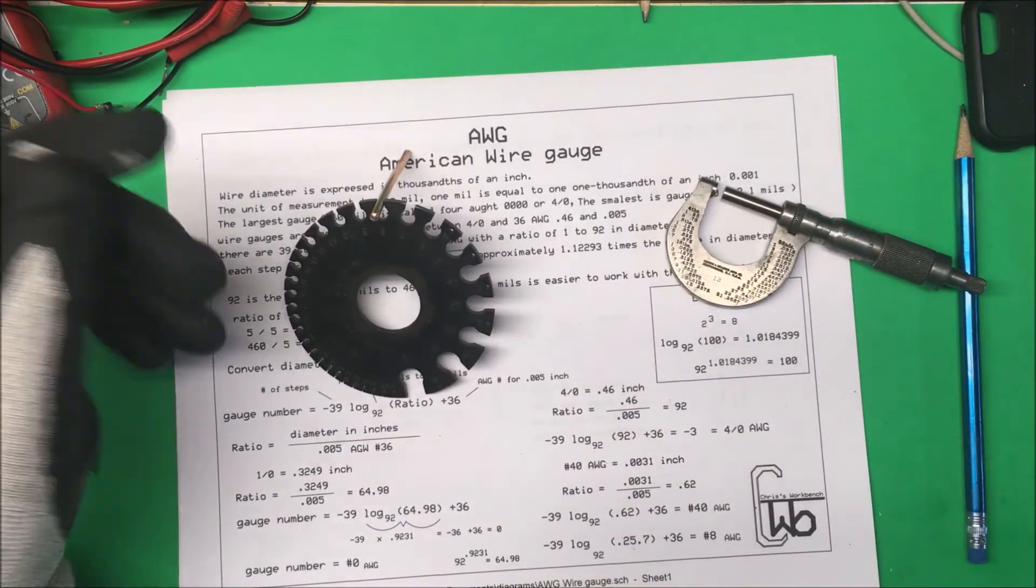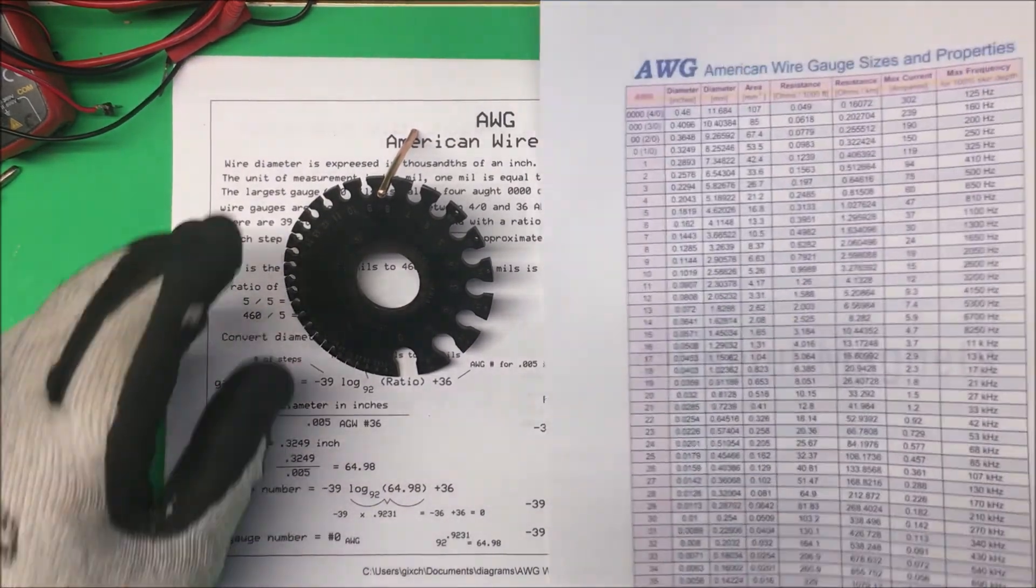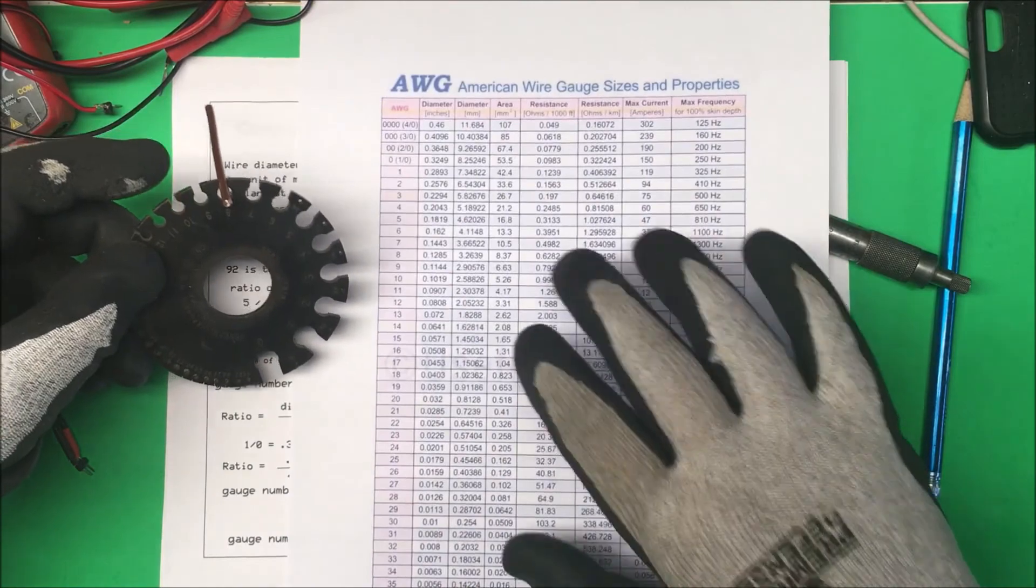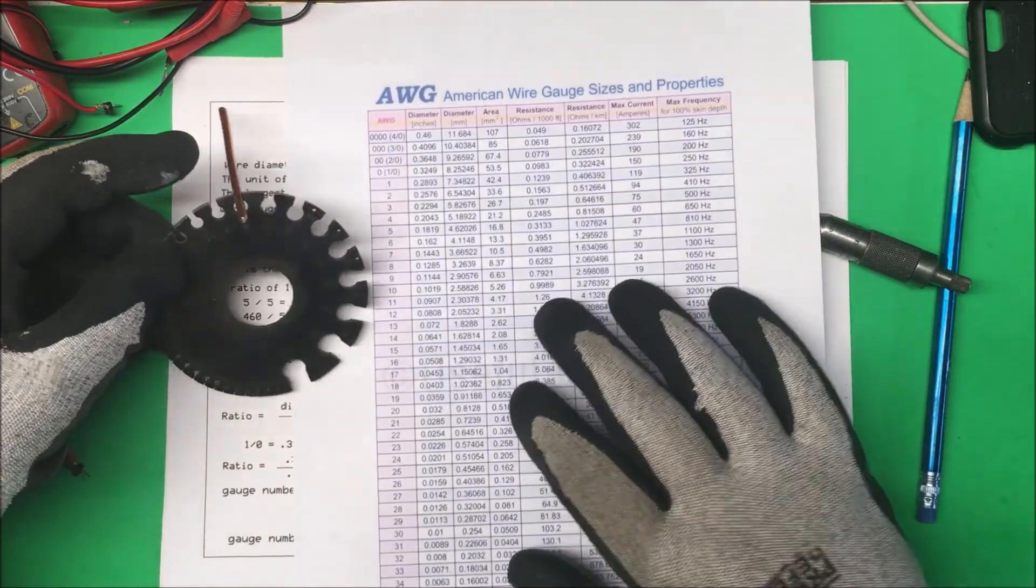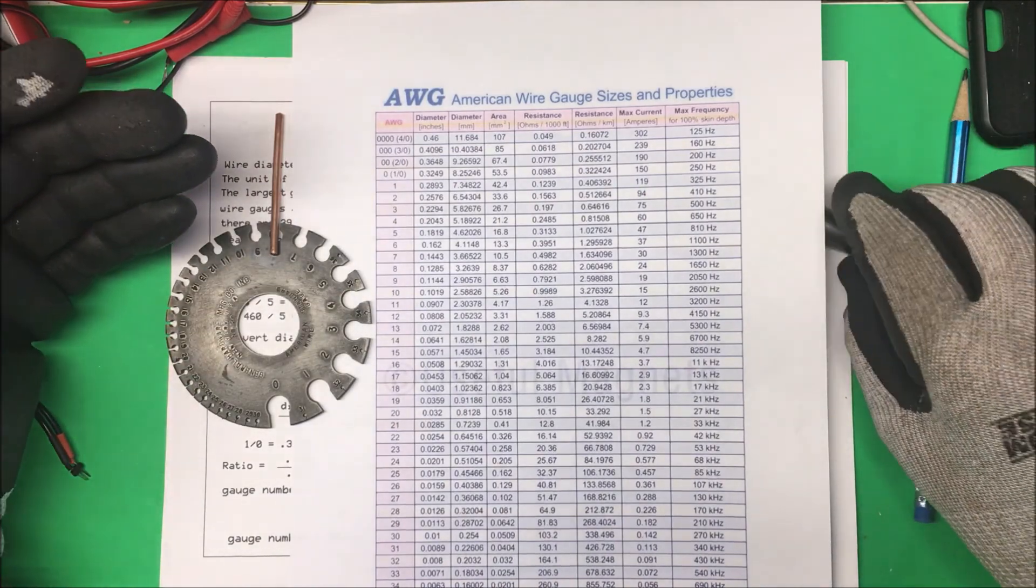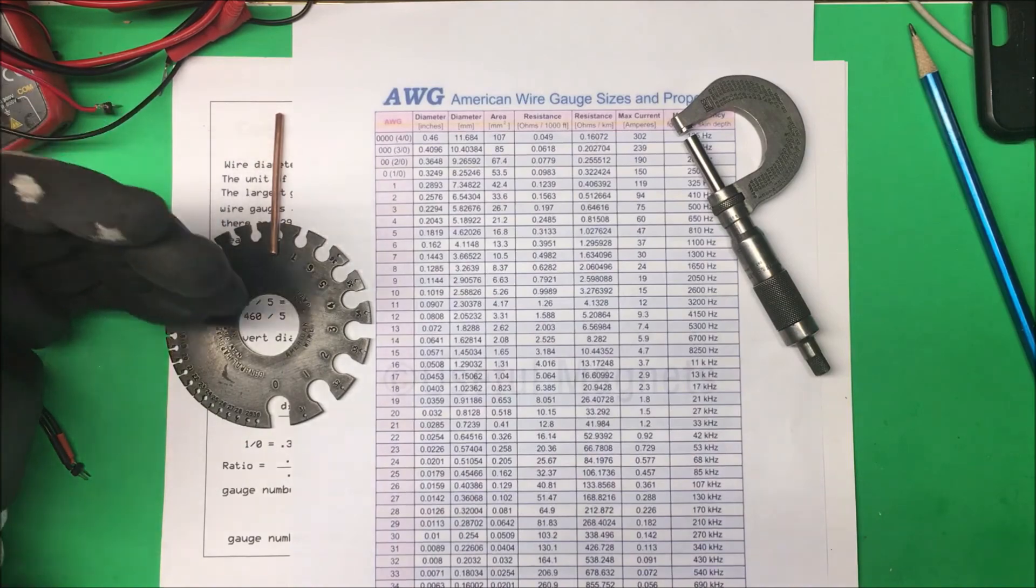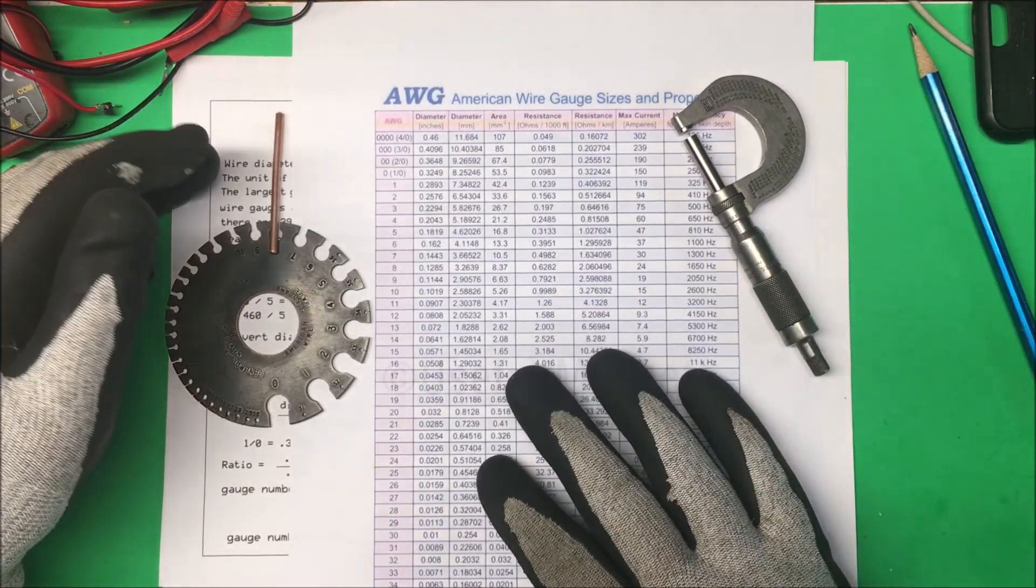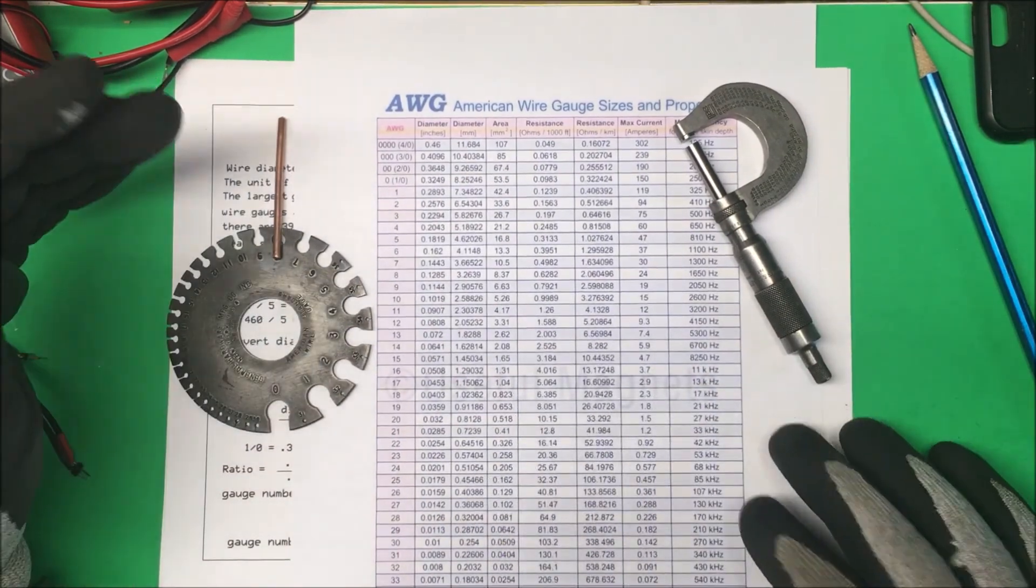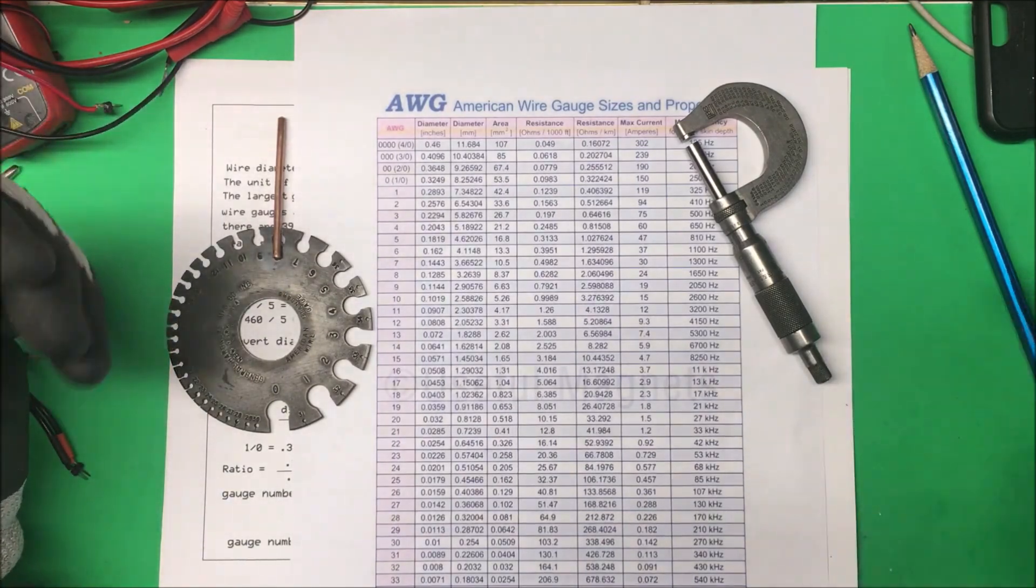Do you have to know how to do that? No, you just have a chart here and it gives you all the diameter in inches and the gauge numbers. But it's just interesting to know how they came up with that and of course they came up with this before they had calculators and computers. That's the American wire gauge, thank you.